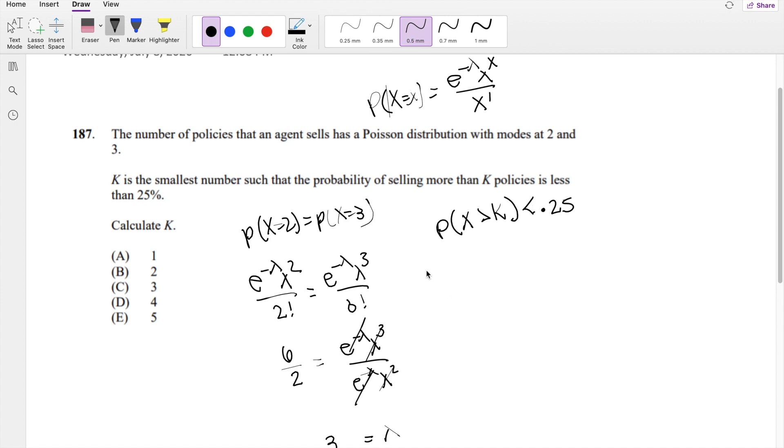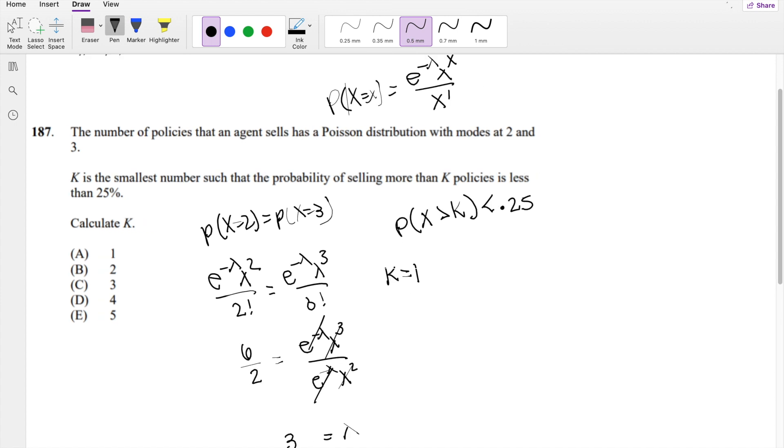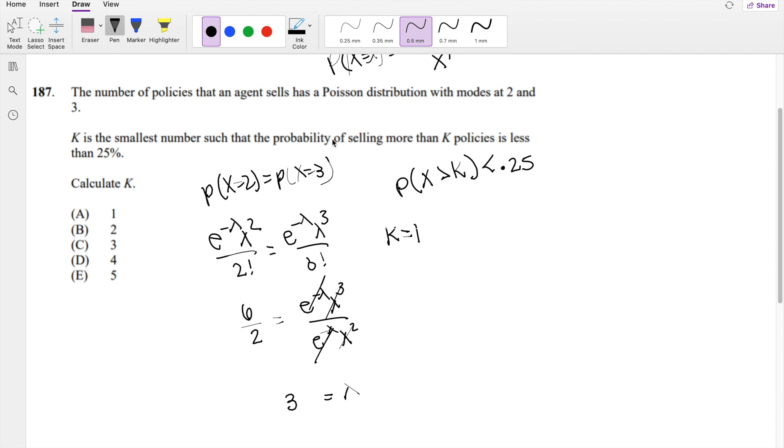Let's say k equals 1. We can rephrase this as: what is the probability that selling more than one policy is less than 25%? If you're selling more than one policy, that probability is 1 minus the probability of 0, minus the probability of 1.